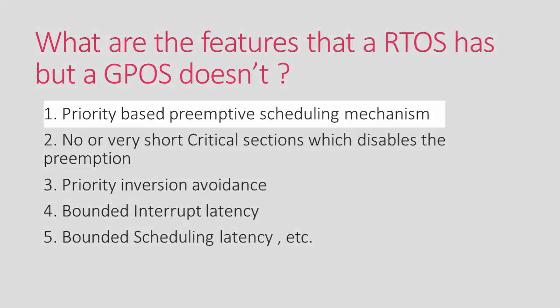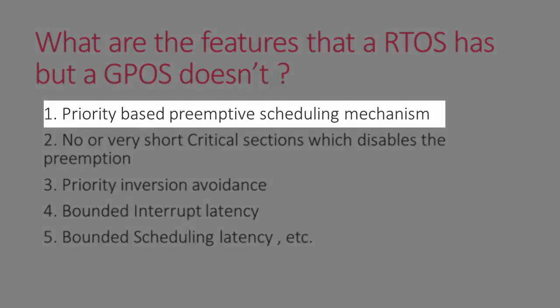...is that the real-time operating system has priority-based preemptive scheduling — that means it always favors the highest priority task in the system. But a GPOS cannot act like this; if it does, then it will kill the throughput of the system.